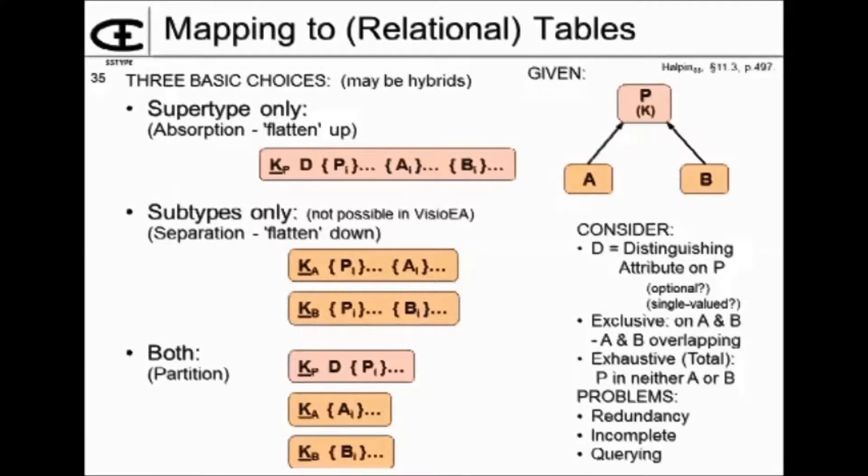How do we map these to tables? We said at the beginning, one of the strengths of subtyping supertyping is that you can defer where you're going to build your tables. Well, at some point, the system would like to know where the tables are. And so you have three basic choices and we could have hybrids of those choices. Let's suppose we're given this P is the supertype, A and B are two subtypes and I'm just taking the simplest possible case.